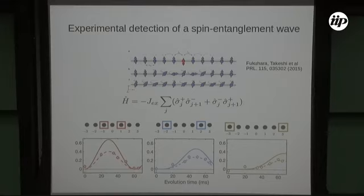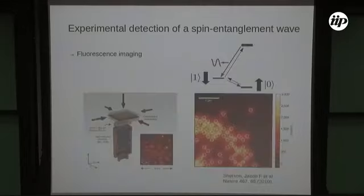A crucial step in this experimental procedure is the detection. Here they are able to resolve each single atom in the chain. They do this by a fluorescence imaging technique that is roughly described by this scheme. All atoms in the optical lattice are illuminated by a laser pulse, and if light is scattered, I know that my atom is in state one, spin down.